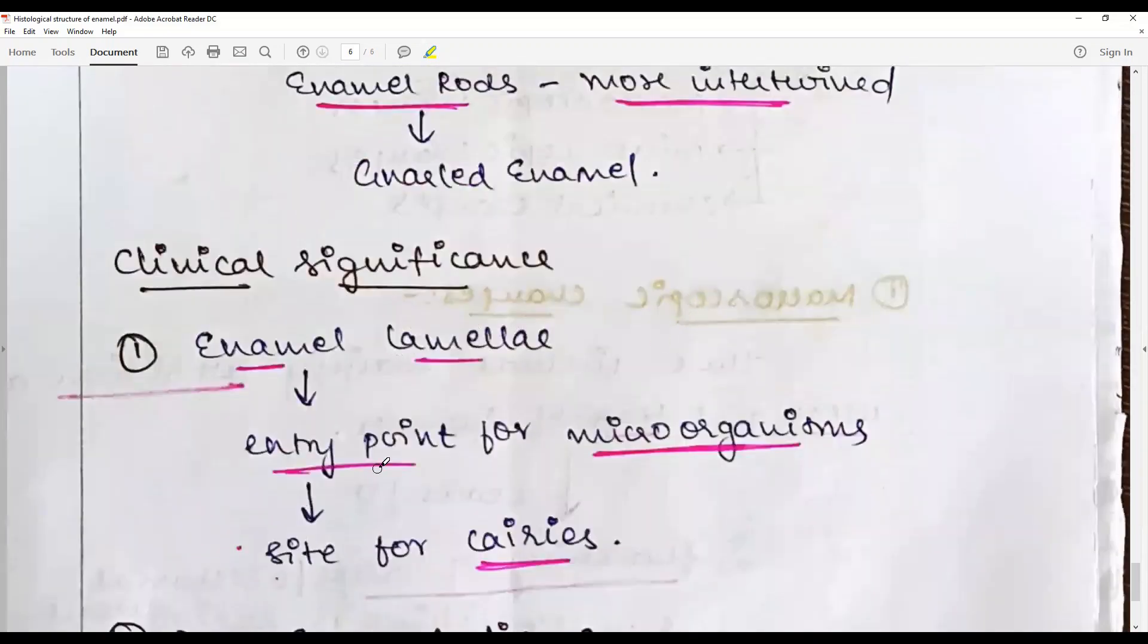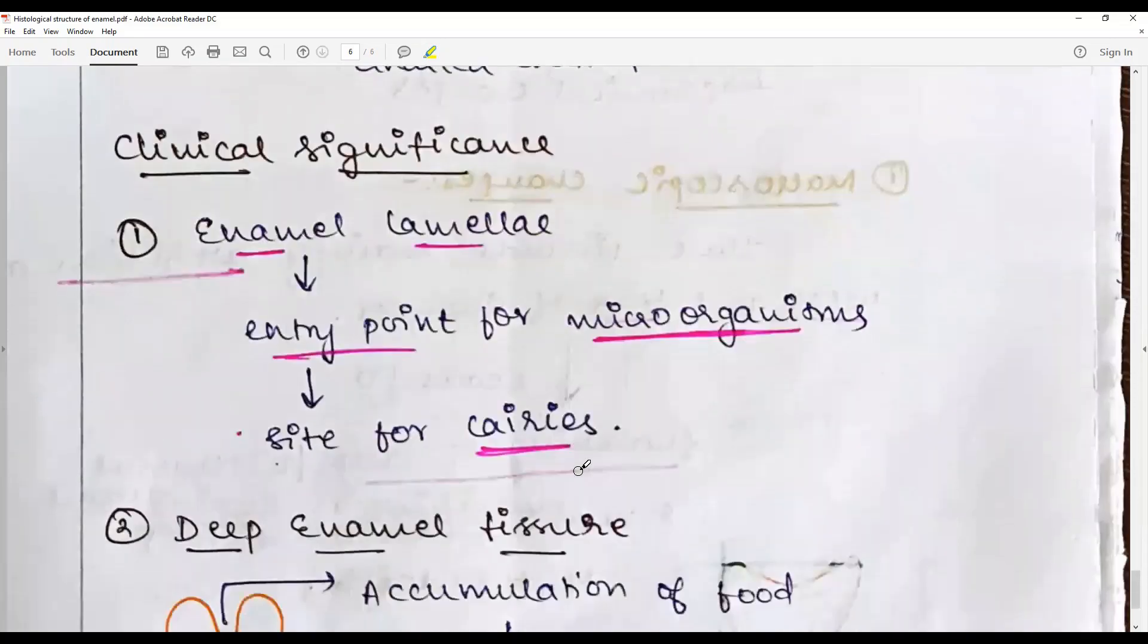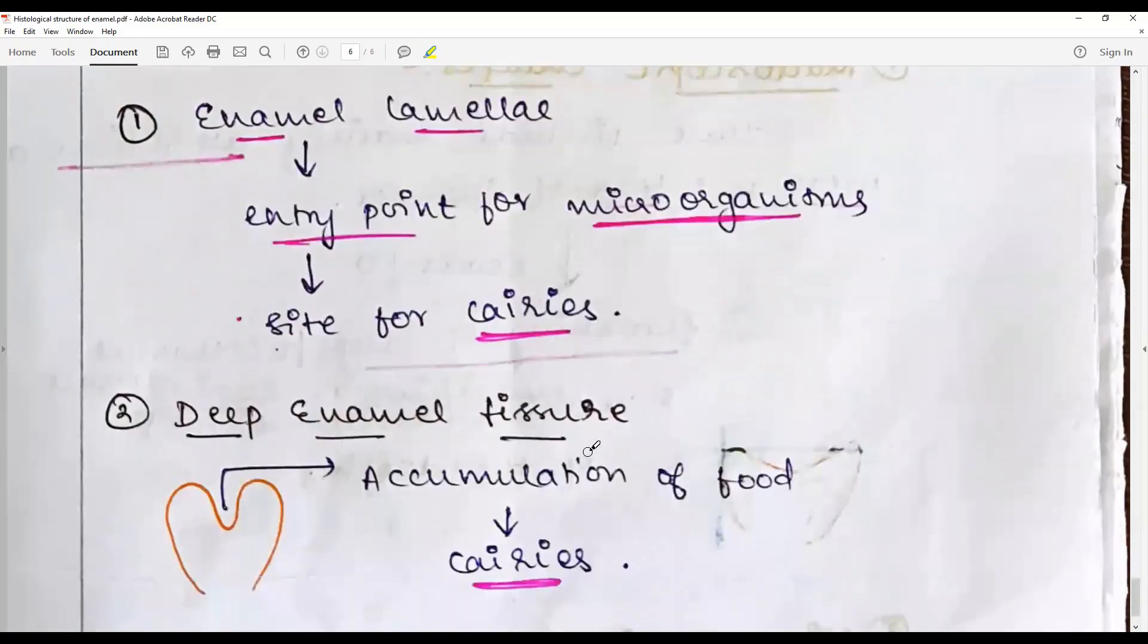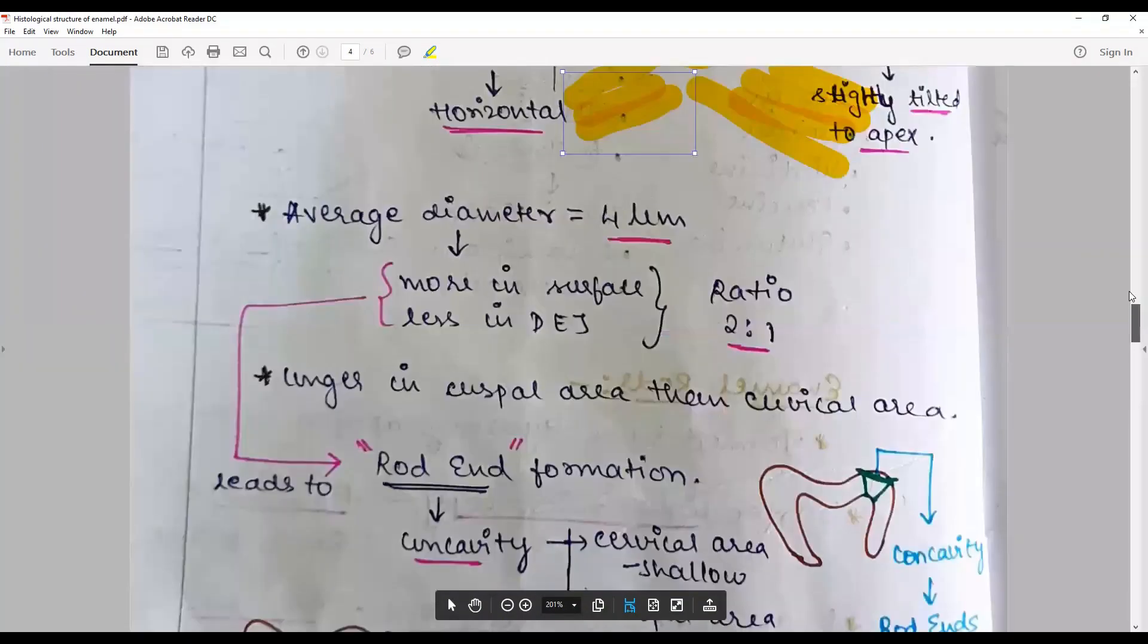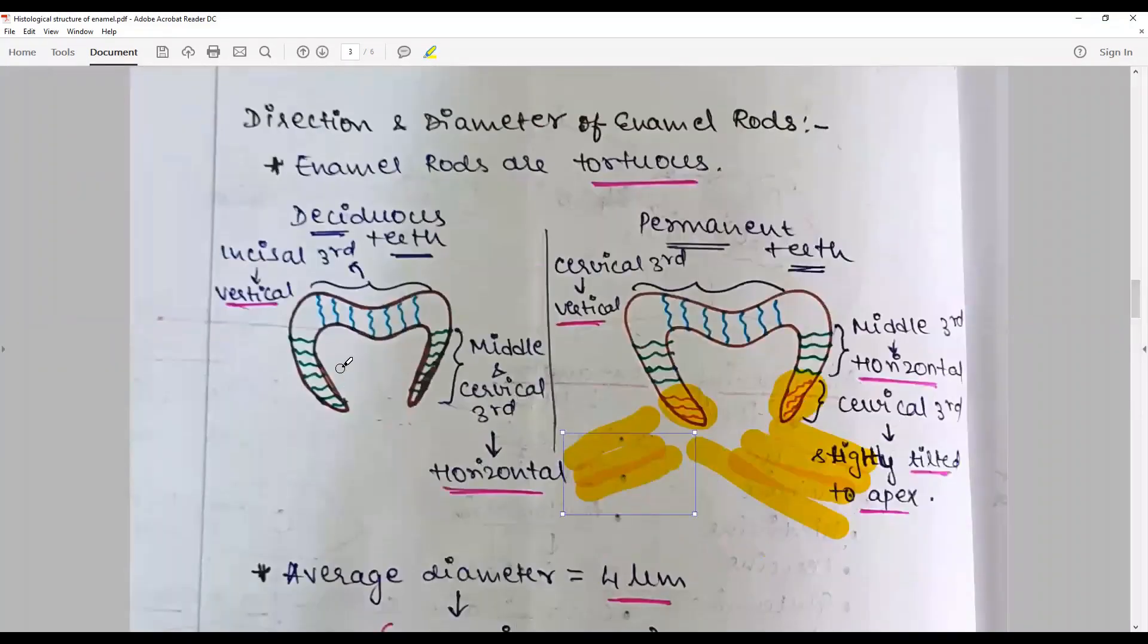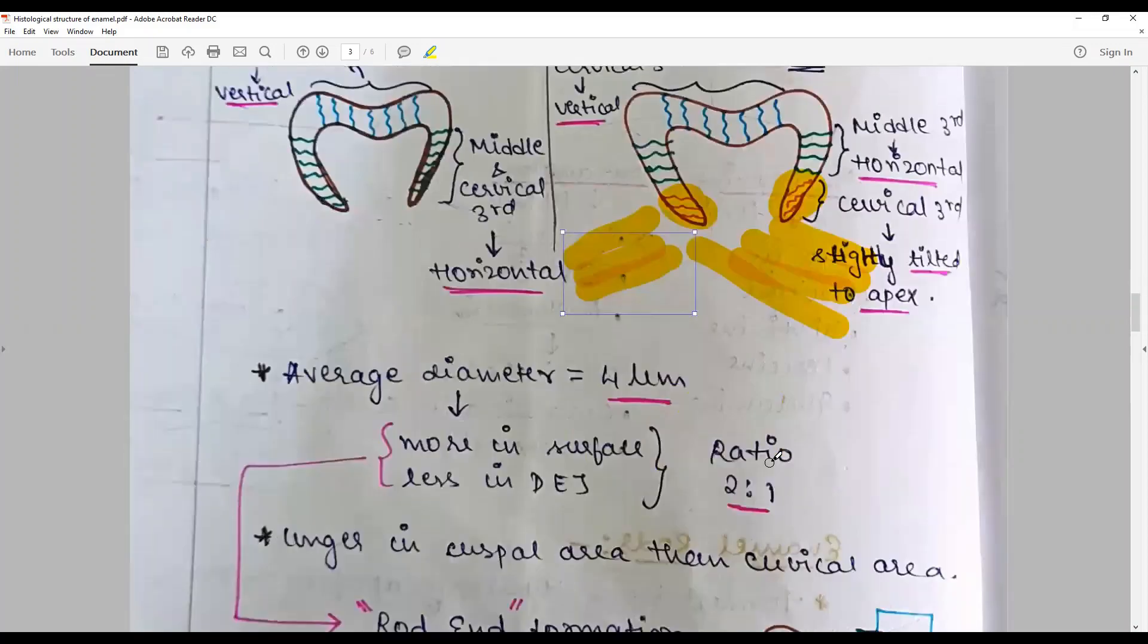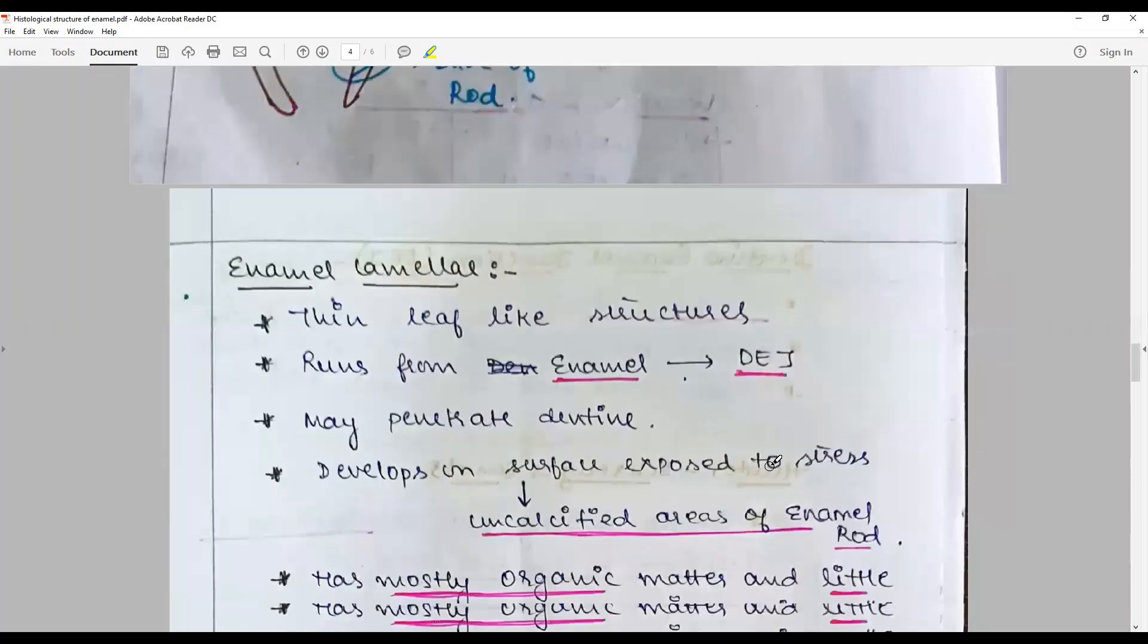Clinical significance - enamel lamellae could serve as an entry point of microorganisms, site for caries. Deep enamel fissures caused by this enamel lamellae could lead to accumulation of food and caries in the pits. The other clinical significance you need to mention is the direction of enamel rods. In pediatrics it is horizontal in the cervical third, whereas here it is tilting like in this direction. So unsupported enamel may be needed to be removed while preparing cavities in the cervical area.